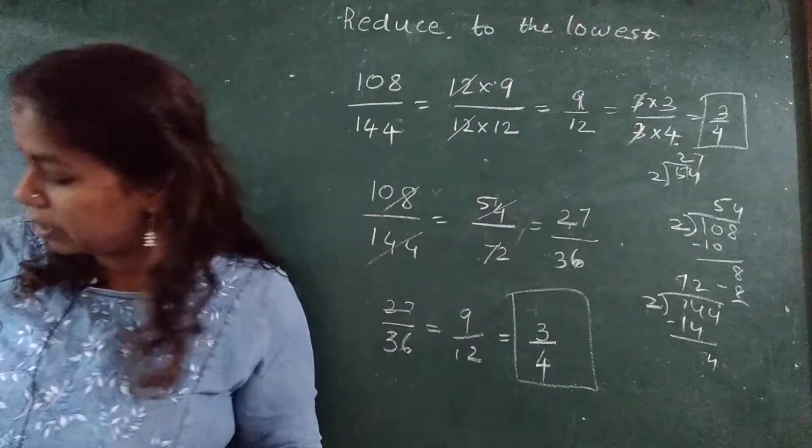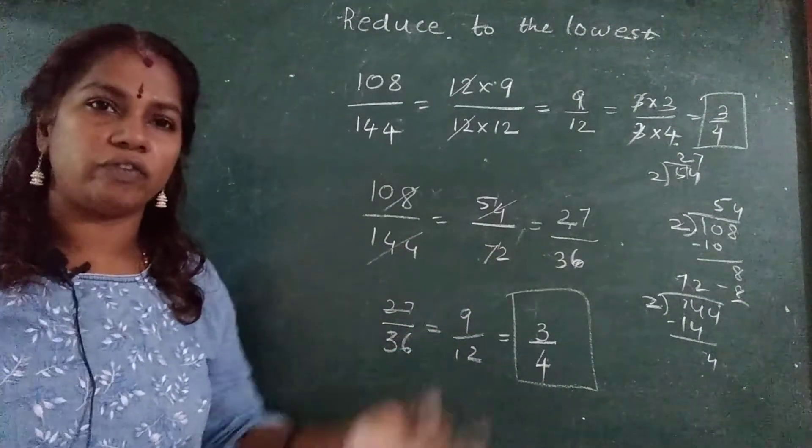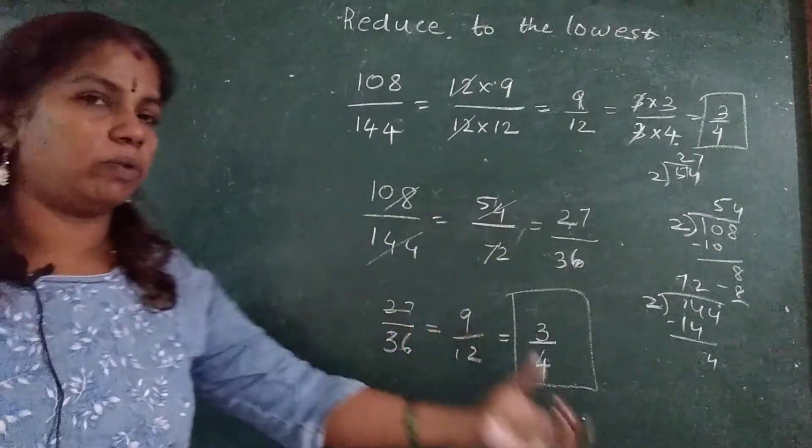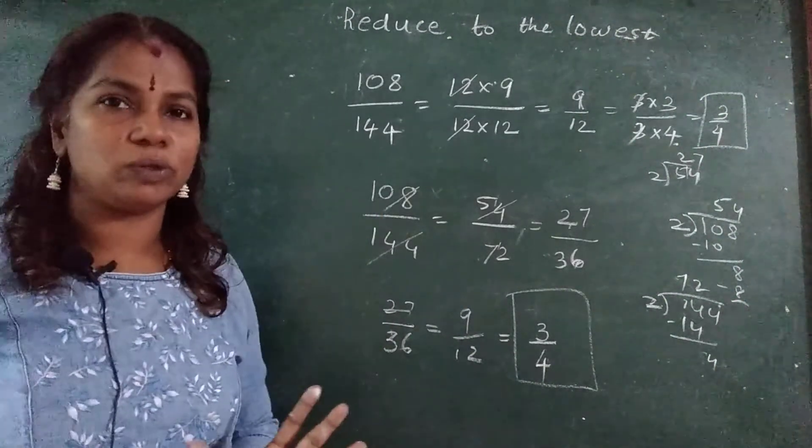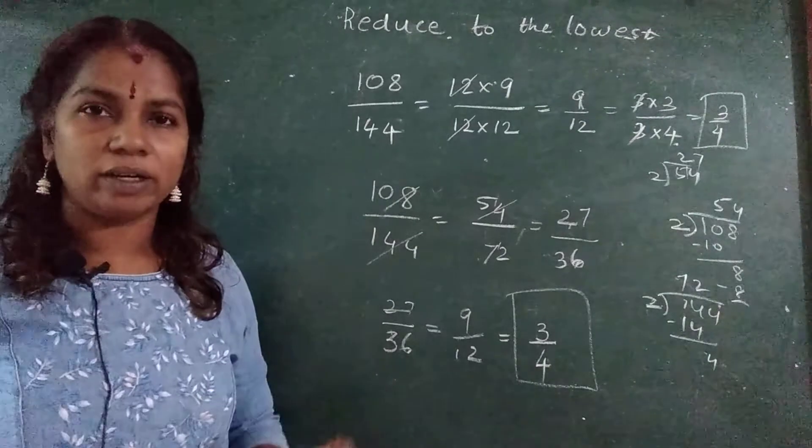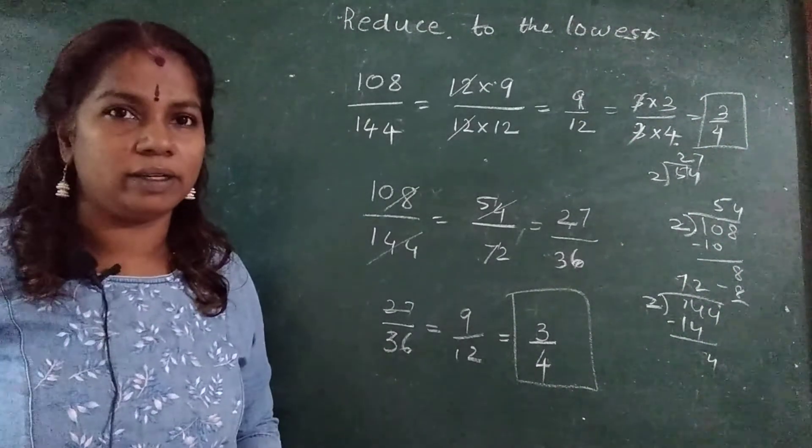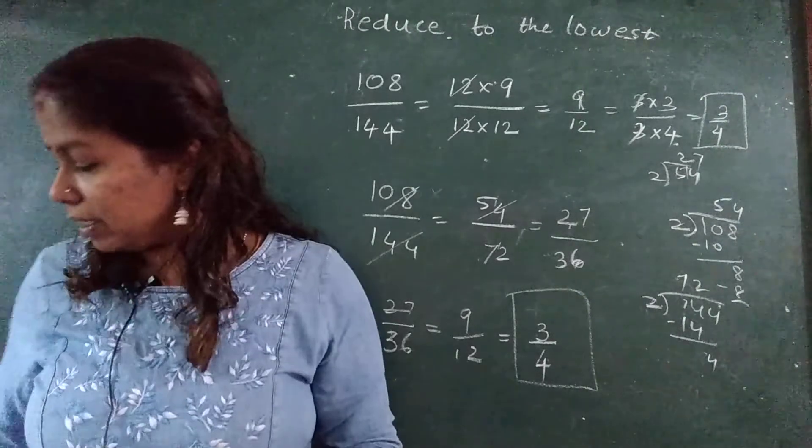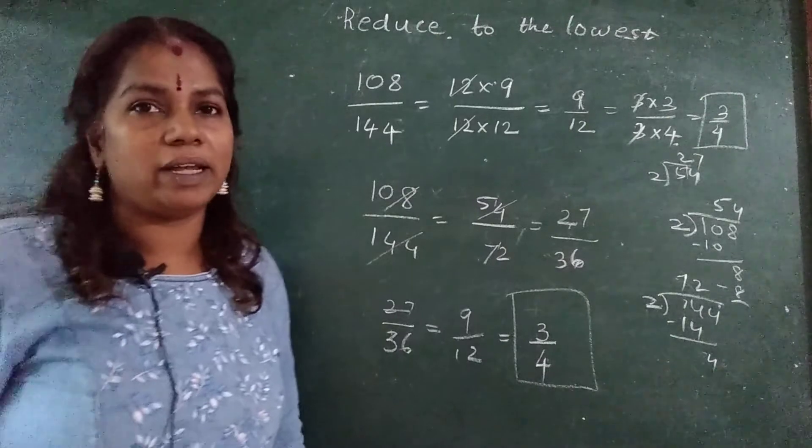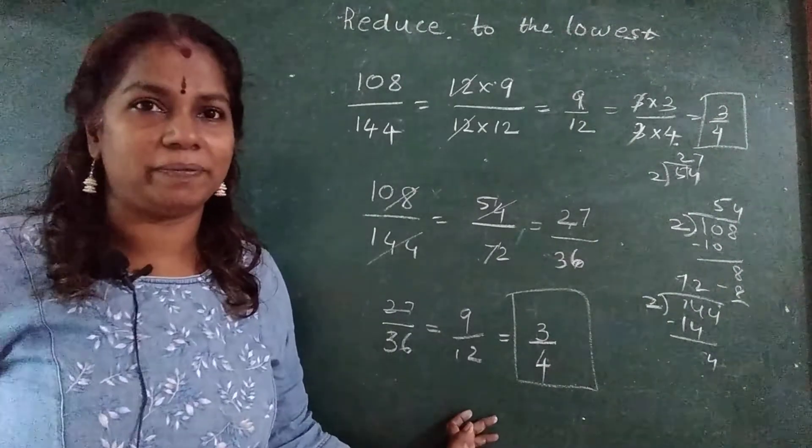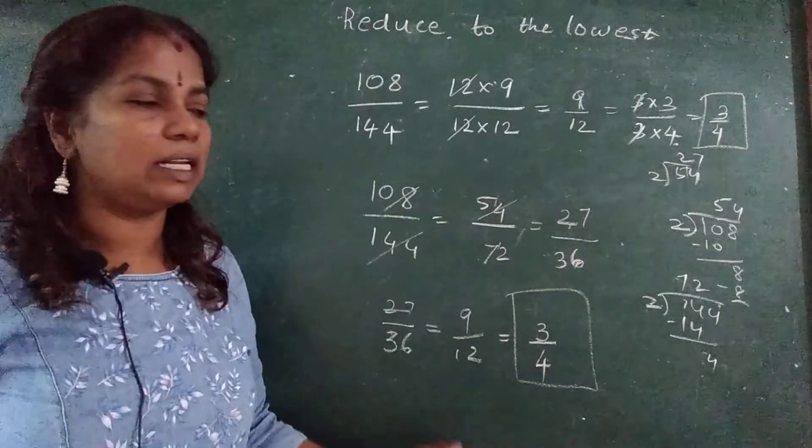When big numbers come, you can go by dividing by 2 or 3 or 5, like that slowly, one by one. Understood? I have taught you all the different ways to get the answer. Whichever way you are comfortable to write, you do it. But the important thing is that you have to study tables. Without learning tables by heart, you cannot do maths. Really read the tables. Study it. Keep practicing.